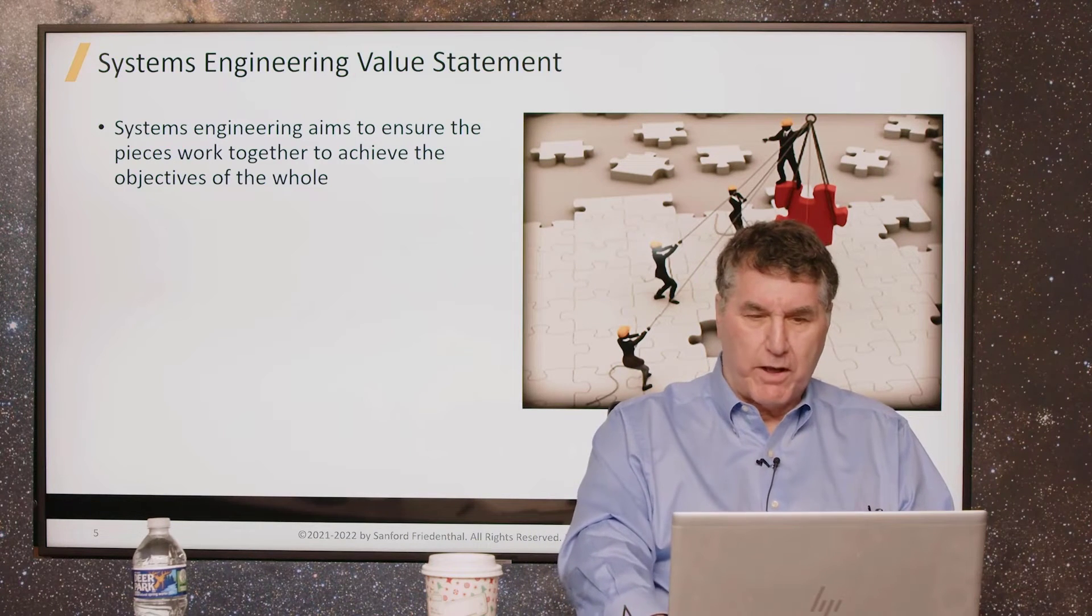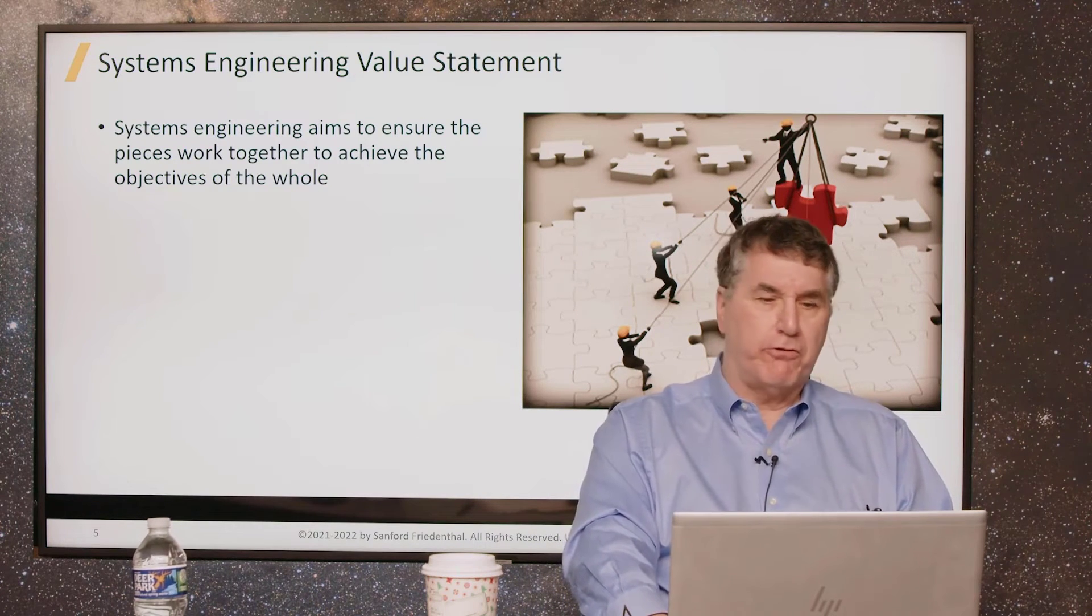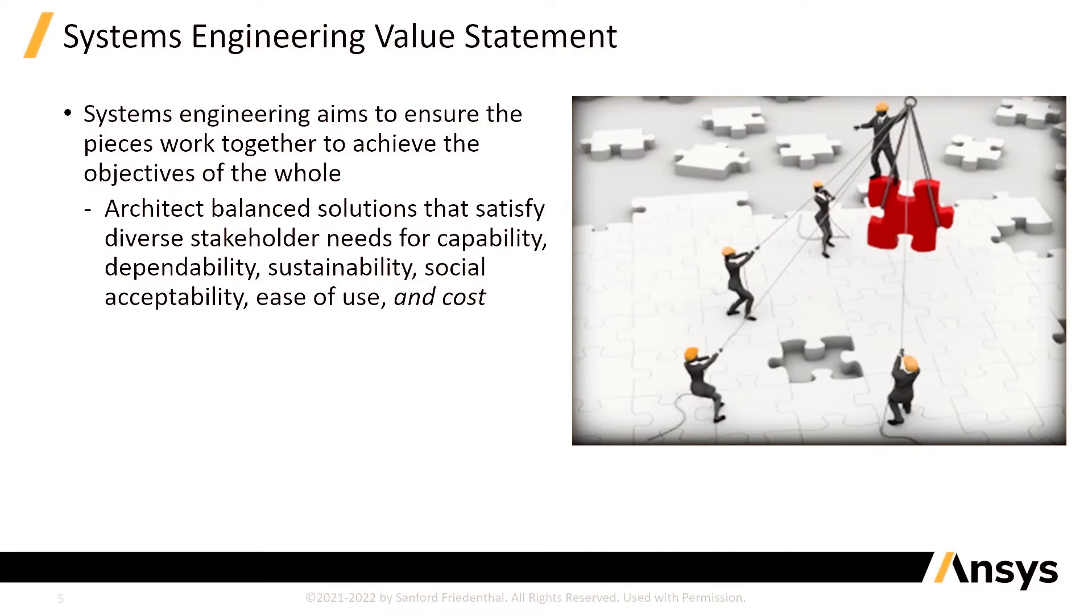That's what systems engineering tries to accomplish. In order to do that, it's involved in architecting balanced solutions, solutions that must balance often competing needs. For example, higher performance and lower cost. And at the same time, manage evolving technology and changing requirements. That's another really critical aspect of what systems engineering helps to address, and manage the ever-increasing complexity of the systems and the associated risk of the development.